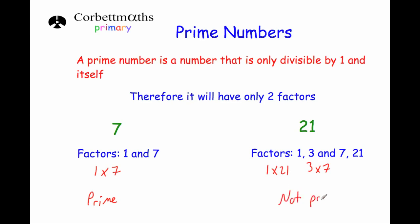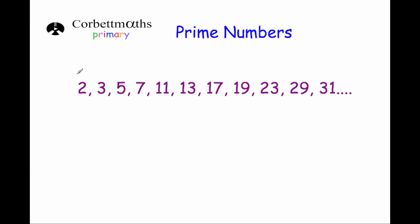Let's have a look at the prime numbers. The prime numbers you need to know are 2, 3, 5, 7, 11, 13, 17, 19, 23, 29, 31, and so on. Now, why are these prime?